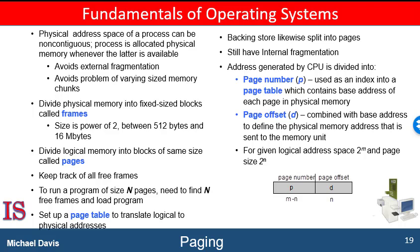If you had an introductory course, you may have learned that a magnetic disk drive is divided into concentric rings called tracks, and each track is further divided into small storage units called sectors. So the size of a page and a frame may be determined by the size of a sector.